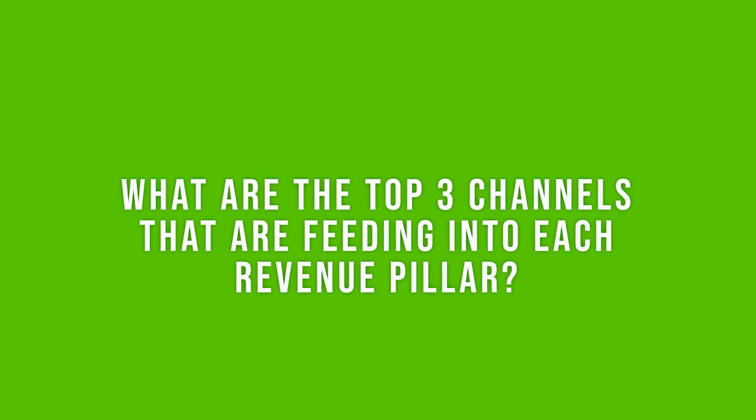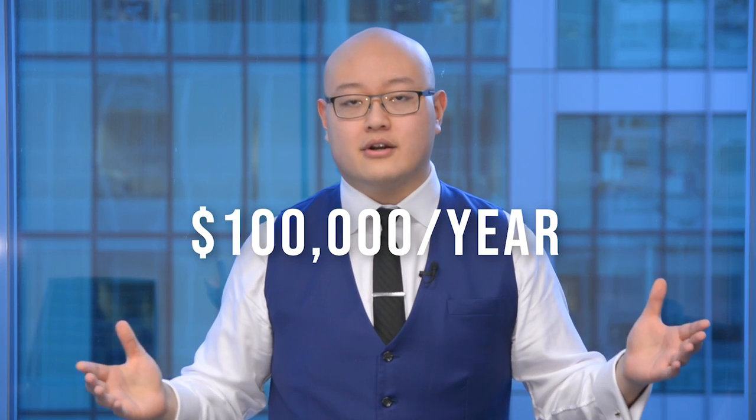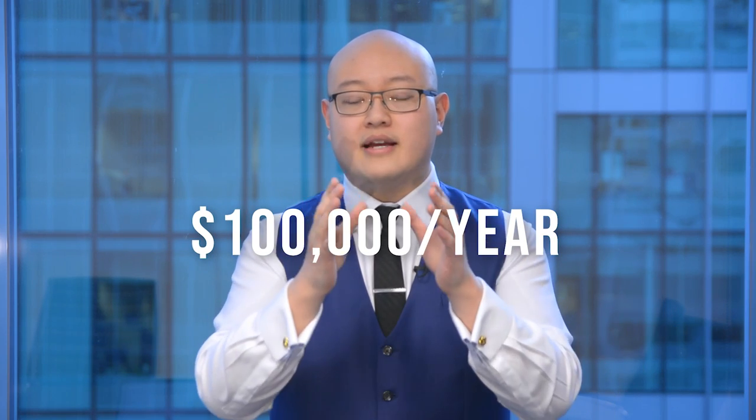Once we've identified the three revenue pillars that you have and all the channels of traffic feeding into them and converting them into customers, then we want to identify what are the top three channels that are feeding into each revenue pillar. For example, let's say you have new revenue right now and you're doing $100,000 a year — we want to break that down.